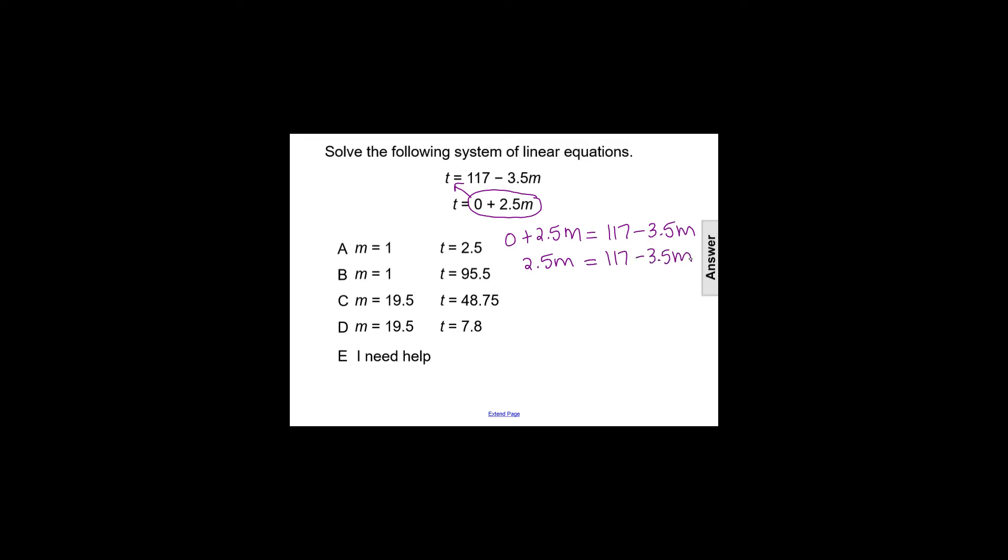We'll then try to get the variable m by itself, so we'll add 3.5m to both sides, which will get us 6m equals 117. And after dividing both sides by 6, we get a value of m of 19.5.